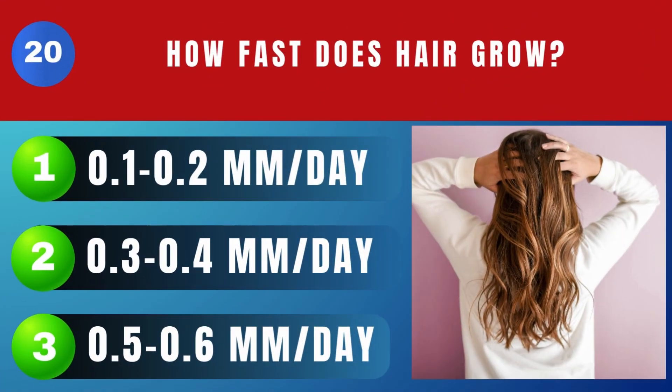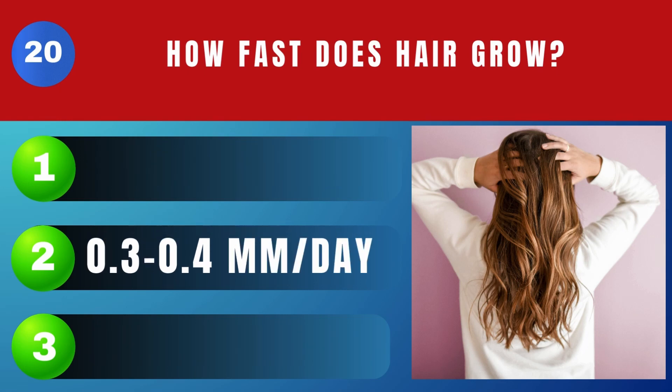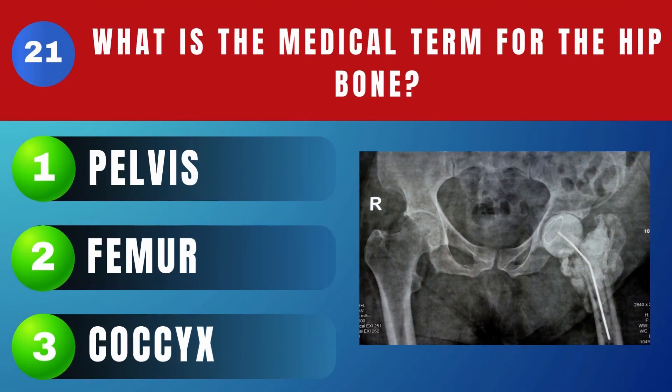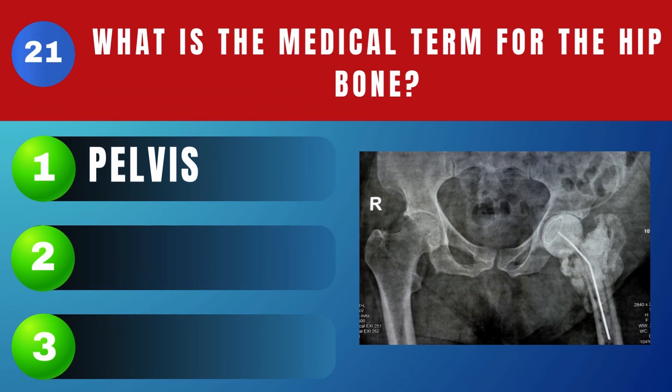How fast does hair grow? From 0.3 to 0.4 millimeters per day. What is the medical term for the hip bone? Pelvis.